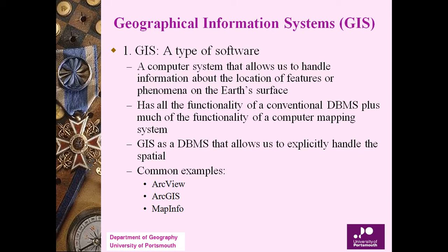GIS is a broad system, but if we make it somewhat concise, we can describe it as a software — a computer system that allows us to handle information about the location of features and phenomena on the earth's surface. It has all the functionality of a conventional database management system along with the functionality of a computer mapping system. When both are combined, it can be termed a GIS.